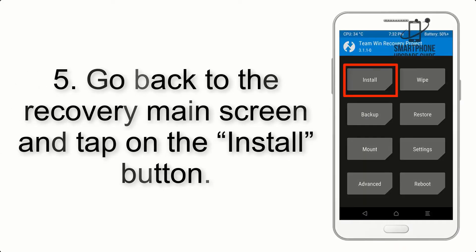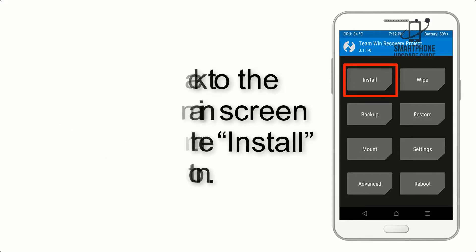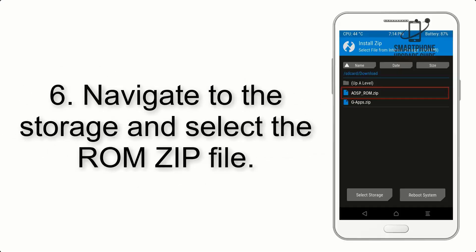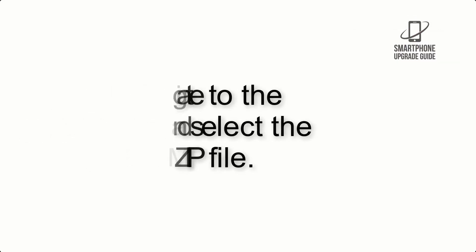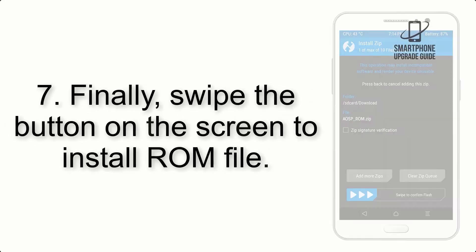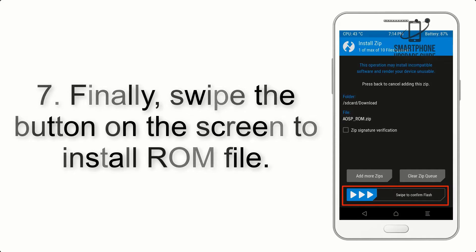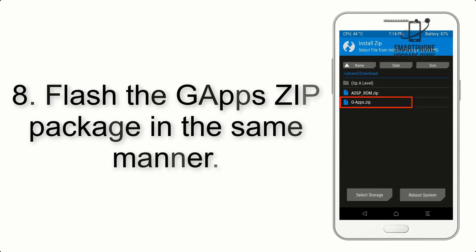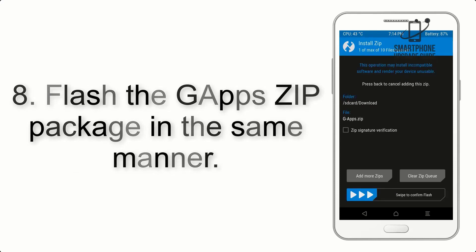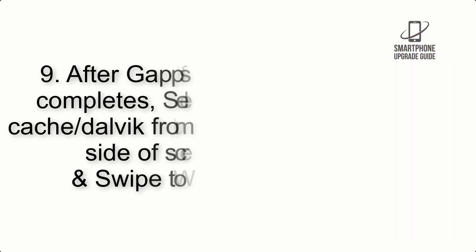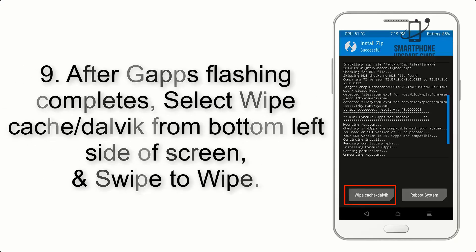Step 5: Go back to the recovery main screen and tap on the Install button. Step 6: Navigate to the storage and select the ROM zip file. Step 7: Swipe the button on the screen to install the ROM file. Step 8: Flash the GApps zip package in the same manner.